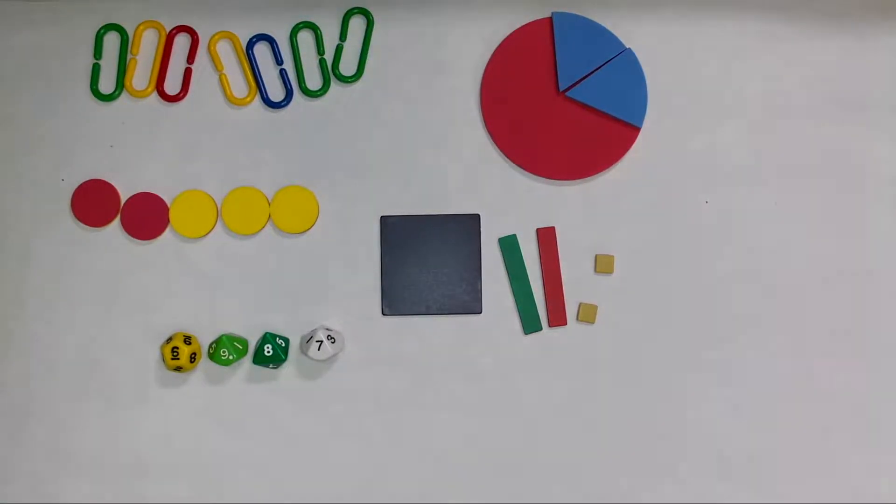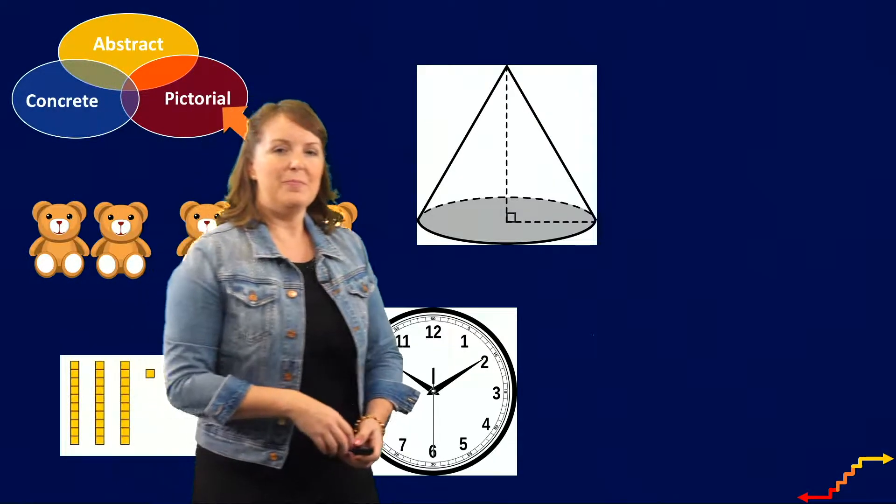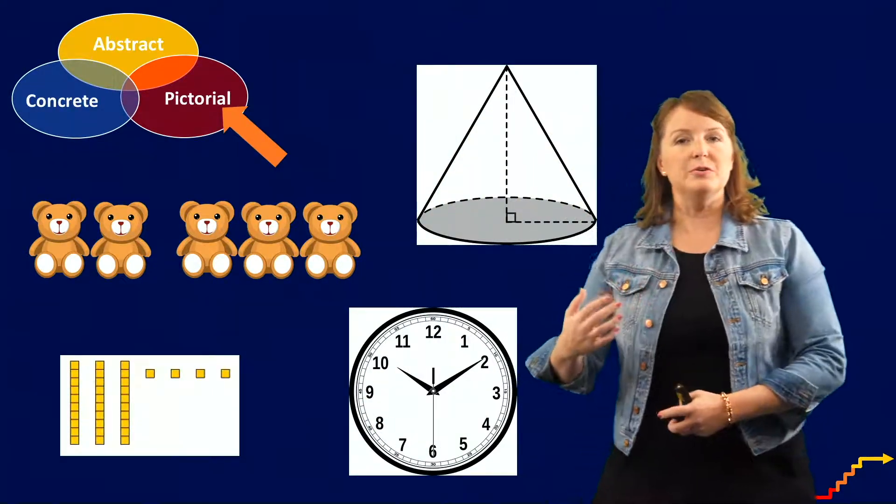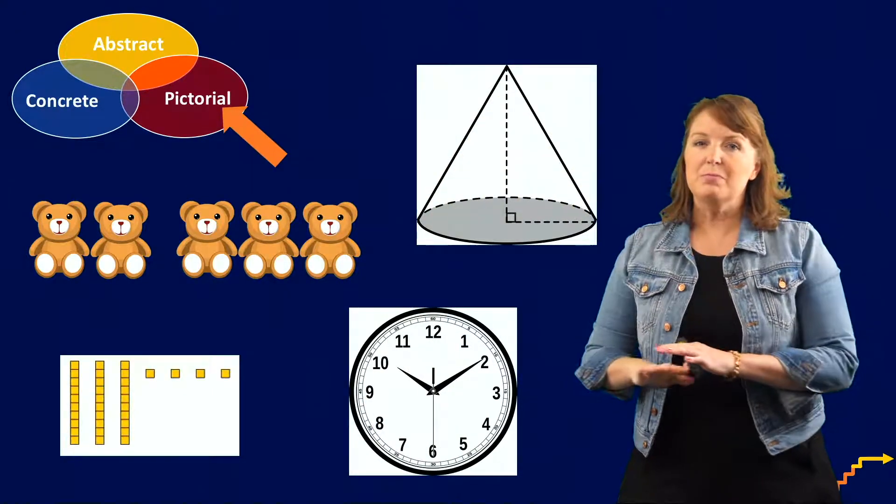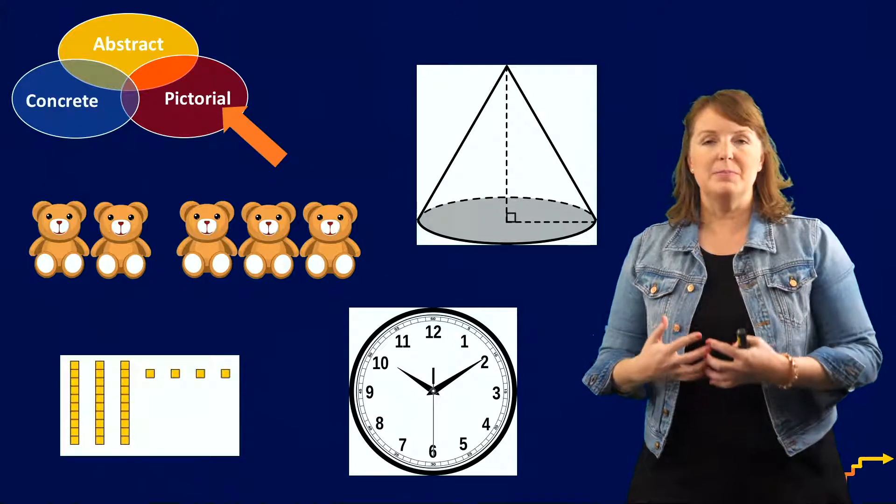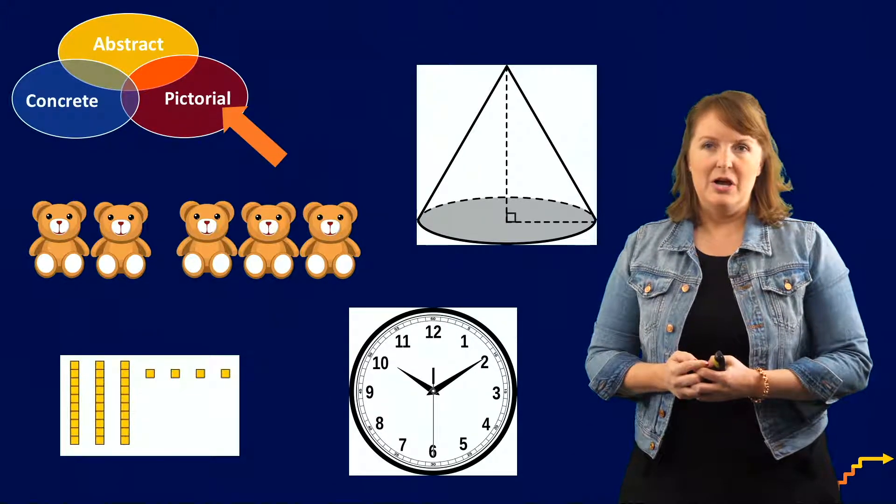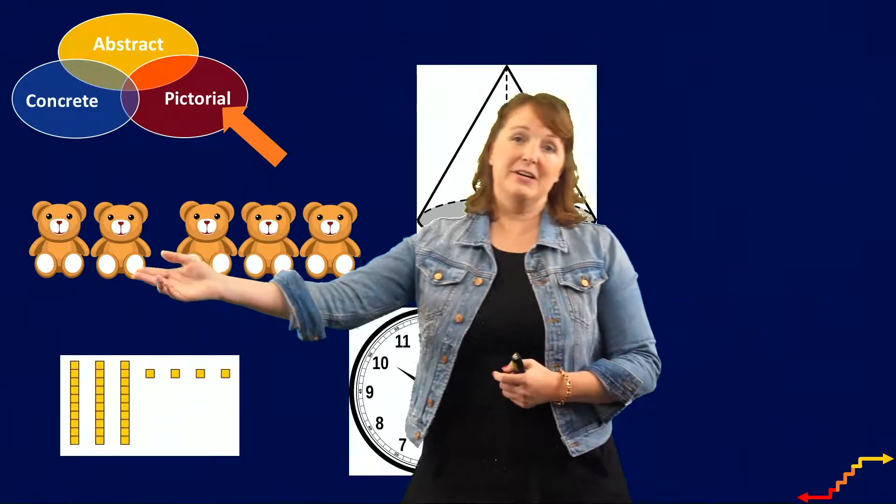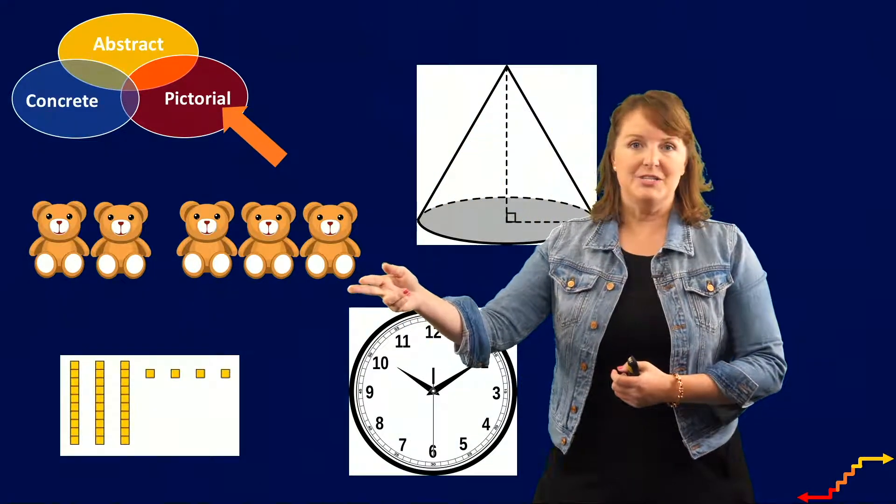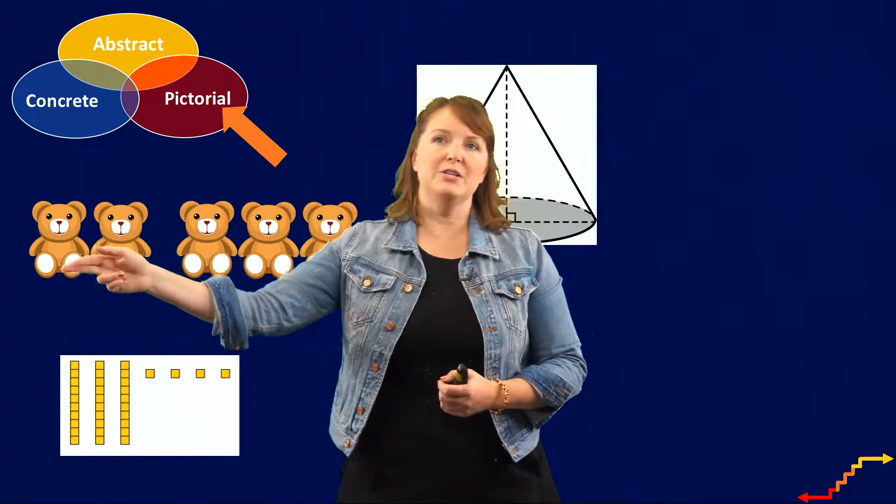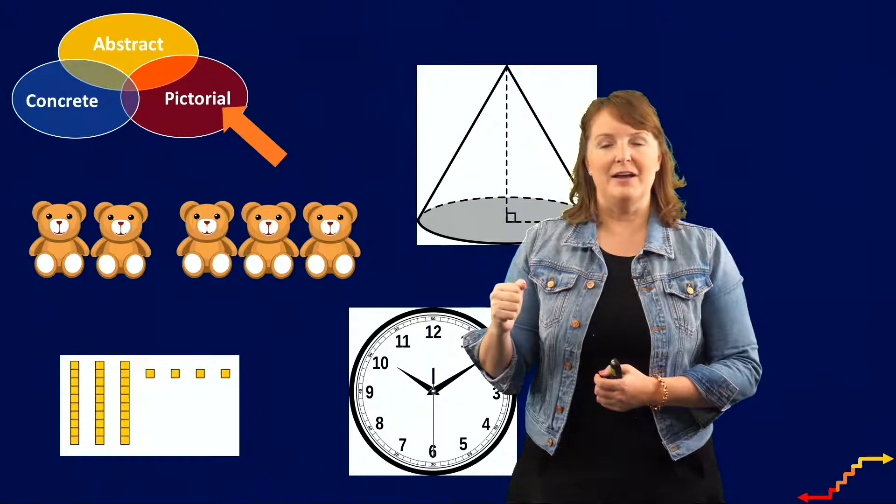Now, another type of representation is the pictorial. And with the pictorial, students are looking at two-dimensional images, usually printed on paper, that represent math concepts and procedures. So here are some examples. Here's a very simple example. I can touch these bears to see that one, two plus one, two, three is five.